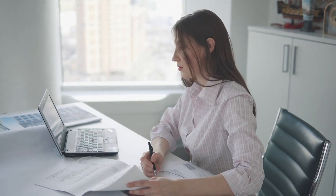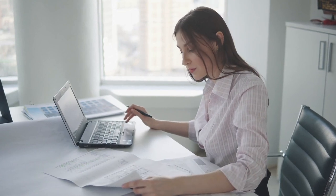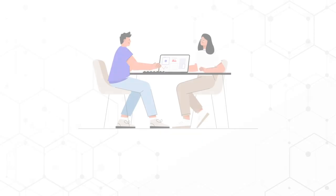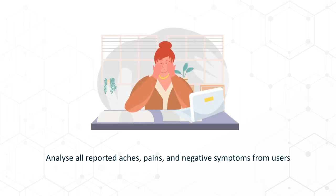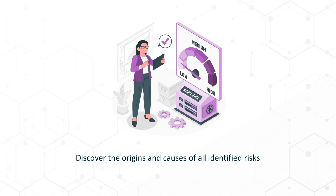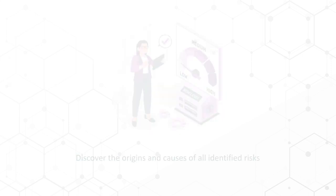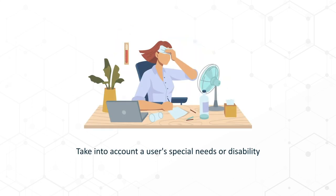When performing an assessment, an assessor must adopt an effective format that will result in a best outcome. This means that a report should be produced leading the assessor and the user to work together to deal with the most serious issues first, analyse all reported aches, pains and negative symptoms from users, discover the origins and causes of all identified risks, examine recent changes or tasks that may contribute to hazards, and take into account a user's special needs or disability.